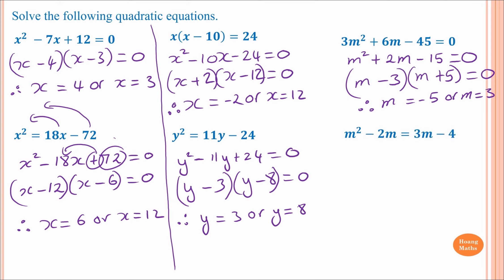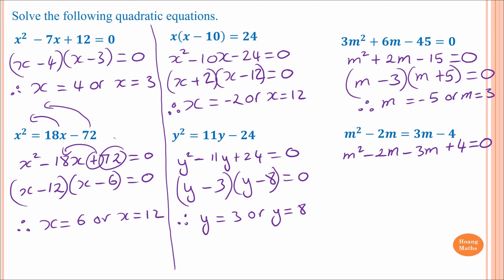Next: m squared minus 2m equals 3m minus 4. We move everything to one side: m squared minus 2m, then 3m moves over becoming minus 3m, and minus 4 moves over becoming plus 4, which equals zero. Collecting like terms: minus 2m minus 3m is minus 5m, so we get m squared minus 5m plus 4 equals zero.